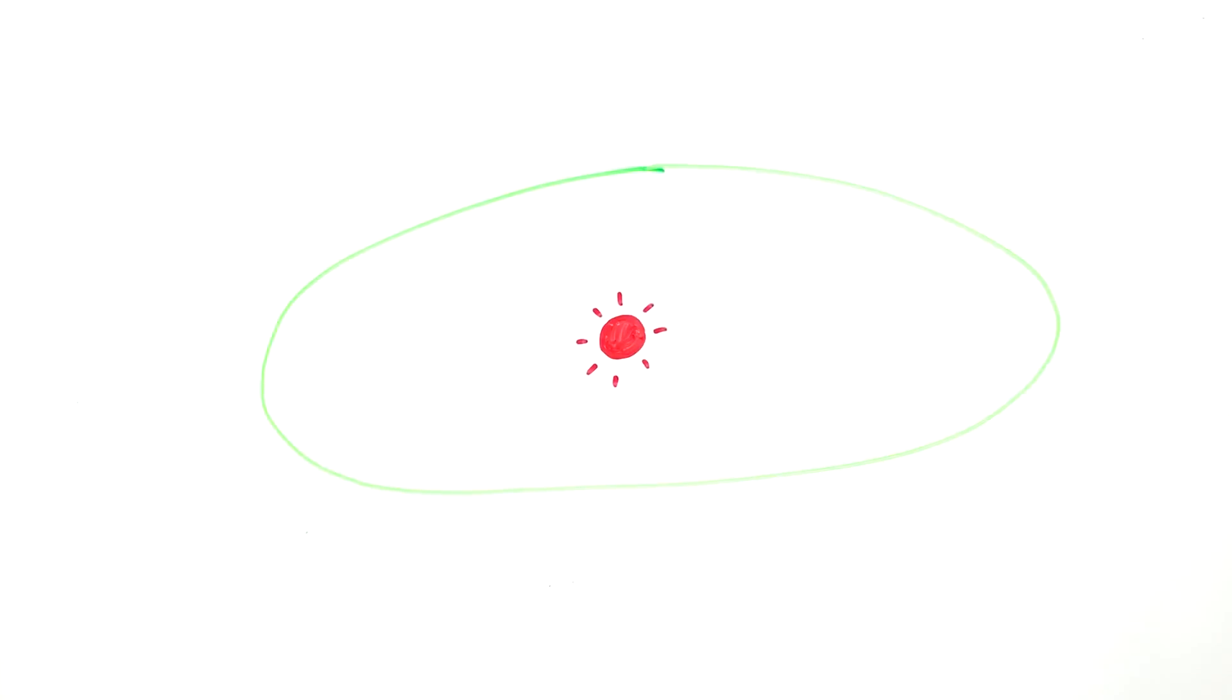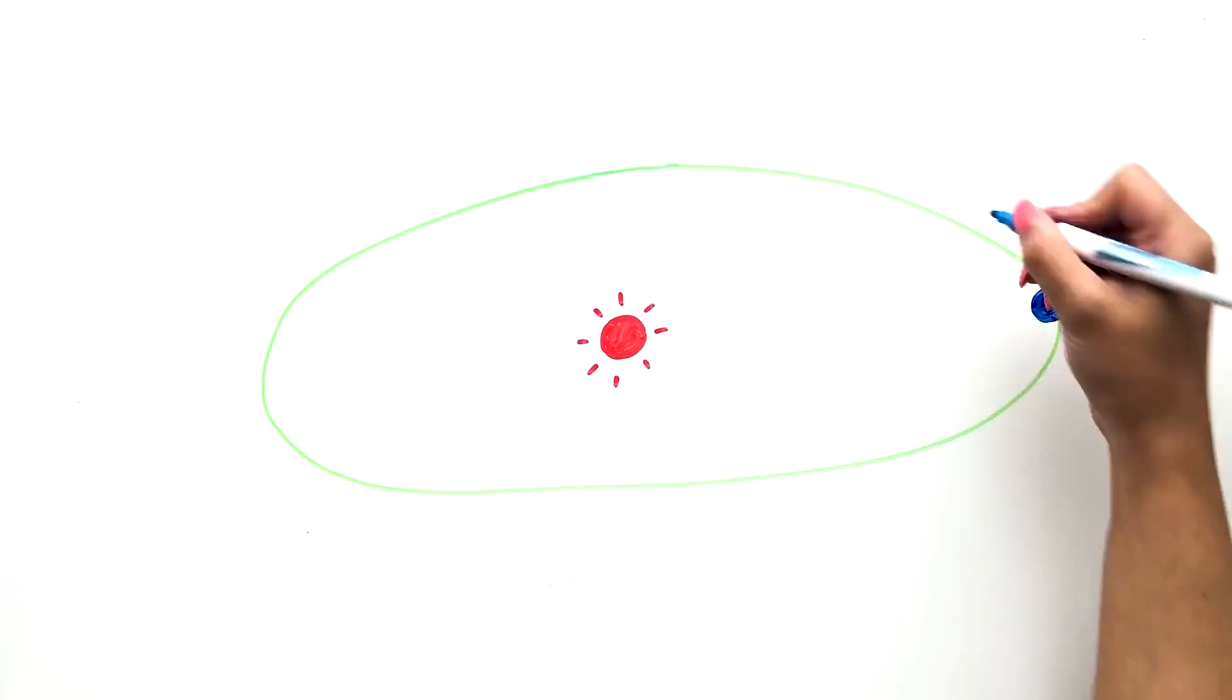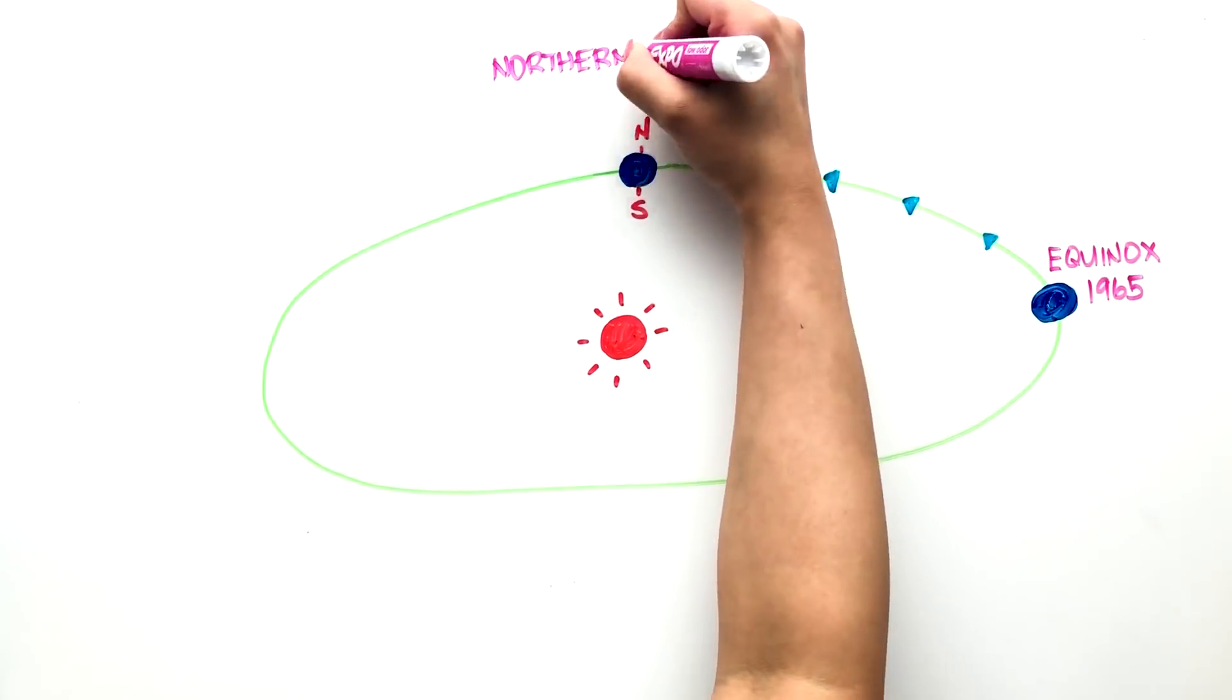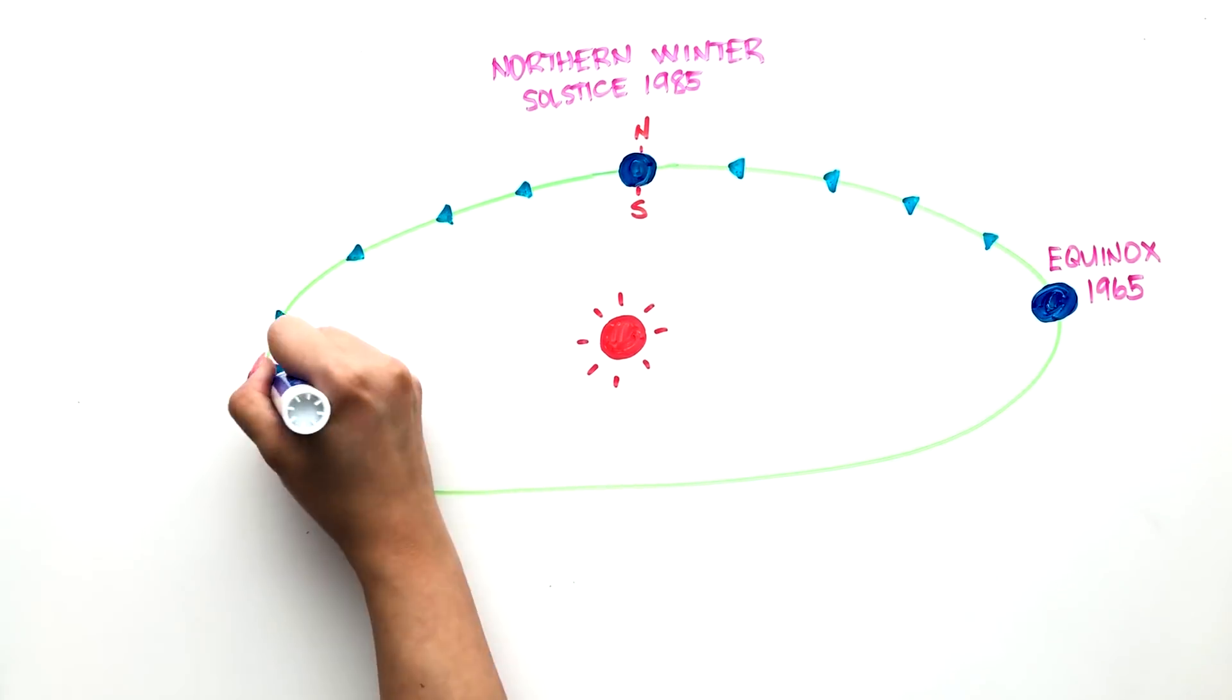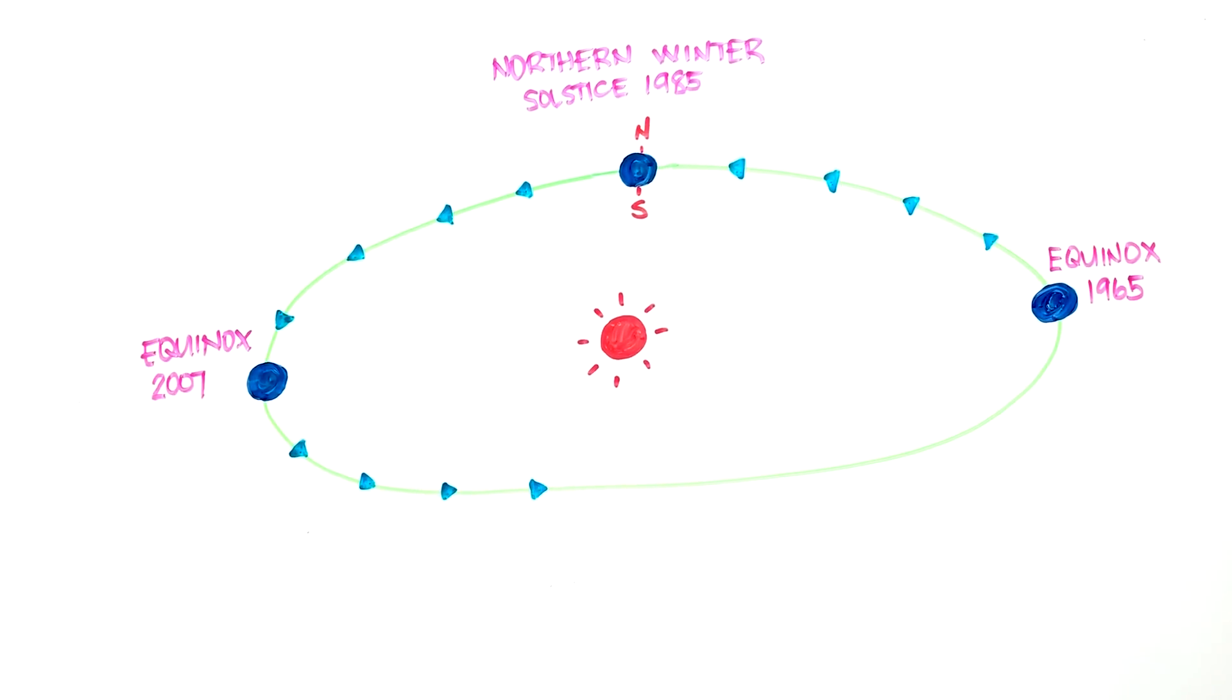This tilt is responsible for extreme seasons because, for 21 years at a time, one hemisphere is facing the Sun and is exposed to constant sunlight, while the other gets 21 years of constant darkness.